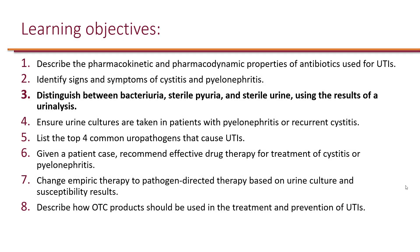We identified signs and symptoms of cystitis and pyelonephritis. Now, the next learning objective is to distinguish between bacteriuria, sterile pyuria, and sterile urine using the results of a urinalysis or UA.